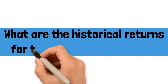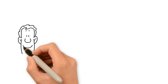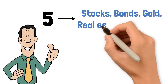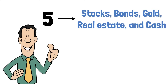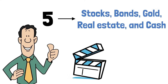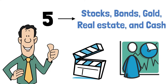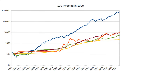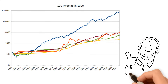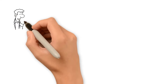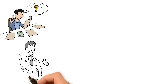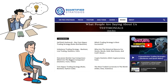What are the historical returns for the main asset classes? The five main asset classes are stocks, bonds, gold, real estate, and cash. In this video, we dive into these asset classes to establish the historical returns over the last century. Please stick until the end and you'll find out which one of the five major asset classes has performed the best. We remind you that we publish statistics and facts about trading strategies and asset returns on our website, quantifiedstrategies.com. Make sure you check it out.